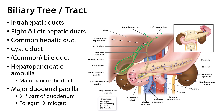This biliary tree is represented as green because you will typically see it in your donors as green — bile, in particular because of the pigment biliverdin, has a green hue to it. Biliverdin is the oxidated form of bilirubin, which is the other bile pigment.